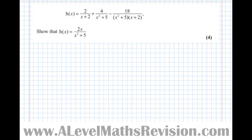Let's do another type of example. This one gives us a function h of x, equal to 2 over (x plus 2) plus 4 over (x squared plus 5) minus 18 over (x squared plus 5)(x plus 2). We need to find a common denominator for all three fractions. The third fraction already has the factor (x squared plus 5) and (x plus 2), so if I times both top and bottom of the first by (x plus 2), and both top and bottom of the second by (x squared plus 5), I get equivalent fractions with the common denominator.